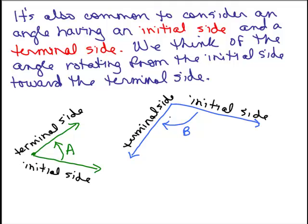Here's another one, angle B, where I have the initial side. You see I have the arrow going from the initial side to the terminal side. By looking at the way that I'm drawing this little arrow, you can tell which is the initial side and which is the terminal side.